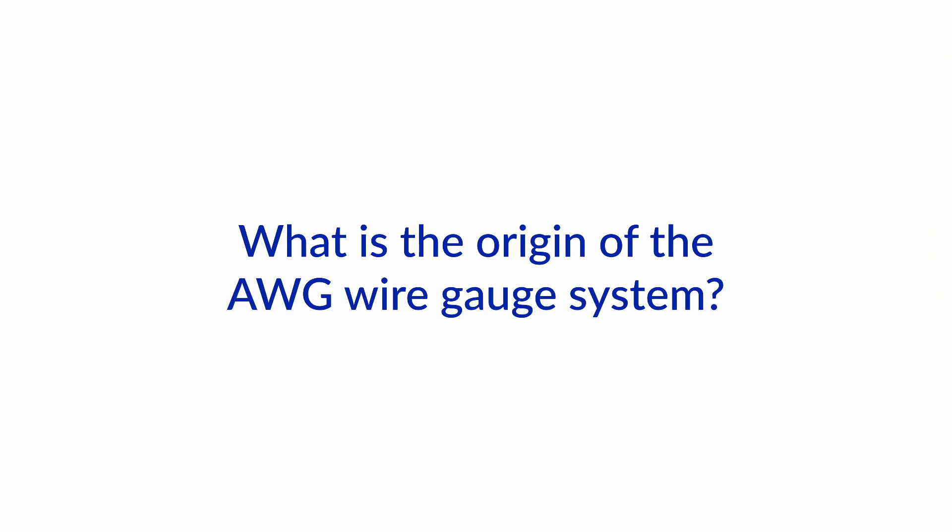Hello and welcome to another one of our Boathow Ask the Expert series. I'm Jan Attenstedt and I'm Nigel Calder. Today we have a question — actually it's a question from me, because as a European I'm used to the square millimeter of cross-sectional area of wires, but in the US you have a slightly different system called the AWG gauge system. So Nigel, what's the origin of the system?